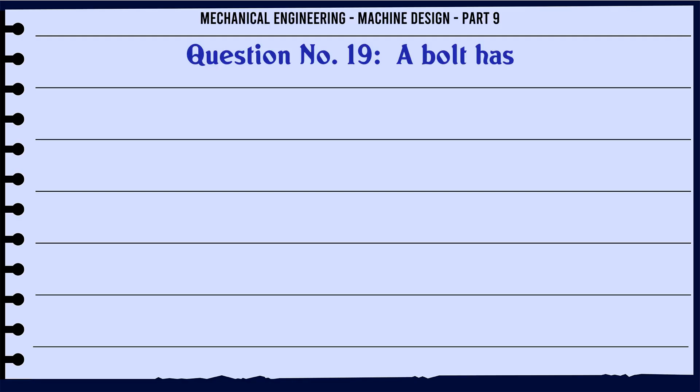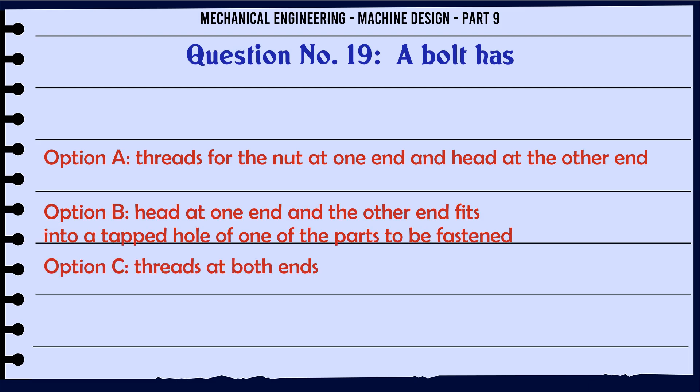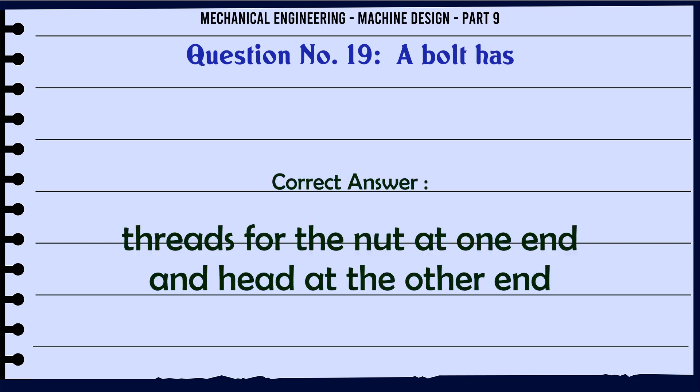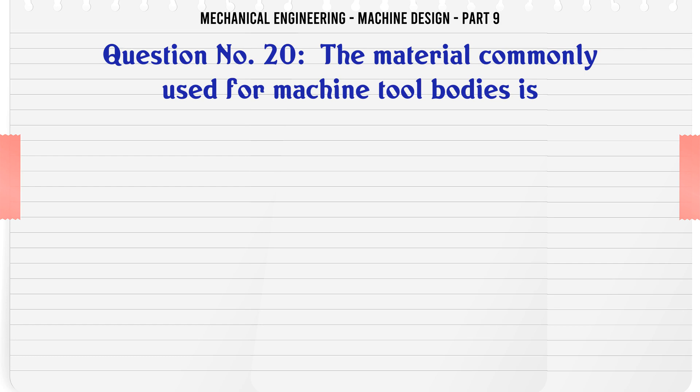A bolt has: A. Threads for the nut at one end and head at the other end, B. Head at one end and the other end fits into a tapped hole of one of the parts to be fastened, C. Threads at both ends, D. Pointed threads. The correct answer is Threads for the nut at one end and head at the other end.